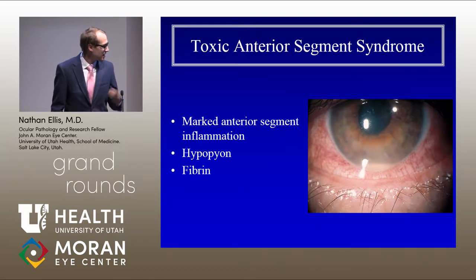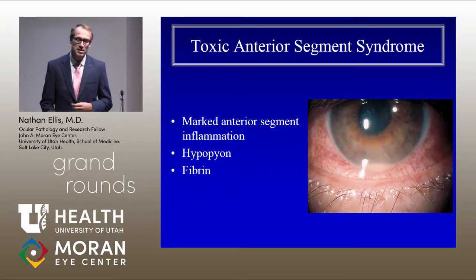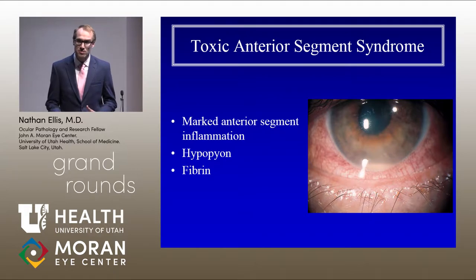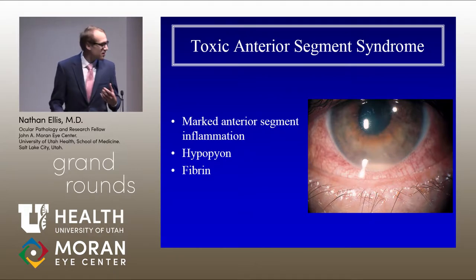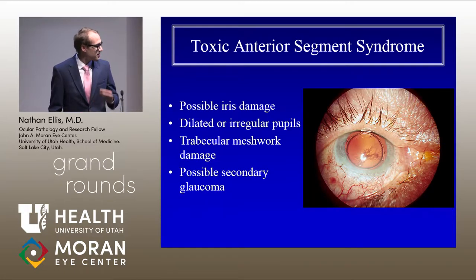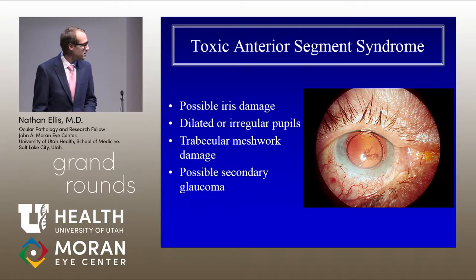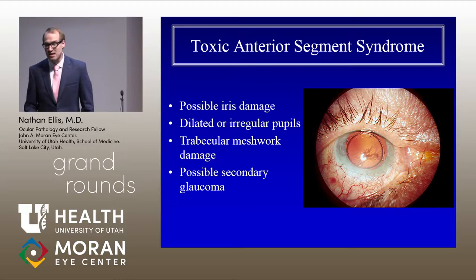This anterior segment inflammation can result in fibrin formation, which can adhere to the pupil, the trabecular meshwork, and the implanted intraocular lens. When inflammation and fibrin adhere to the iris, it can cause dilated irregular pupils, as well as clog the trabecular meshwork and cause secondary glaucoma later.